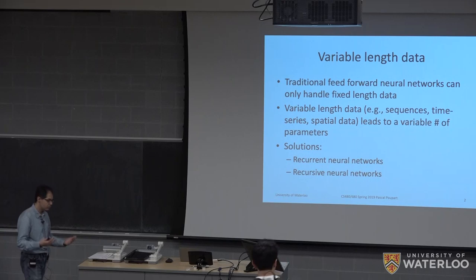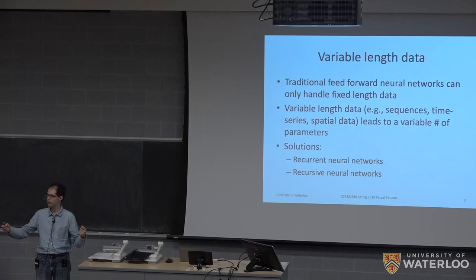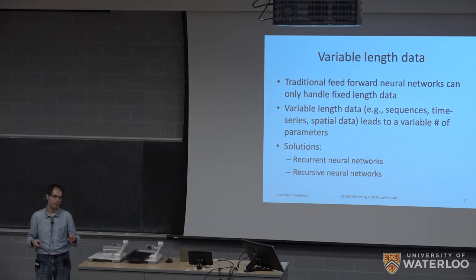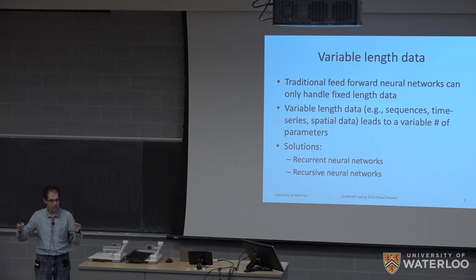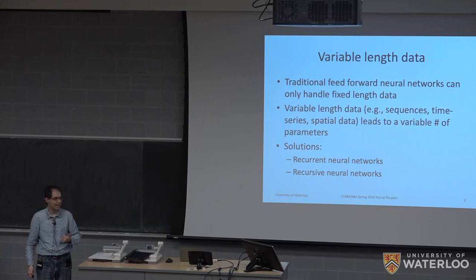When it comes to variable length data, the issue is that feed-forward neural networks assume the input is of a fixed length — a vector with a fixed number of features. But if the input size changes, for example with time series data like activity recognition, one recording might last 15 minutes and the next 20 minutes, so a fixed architecture cannot work with arbitrary length sequences.